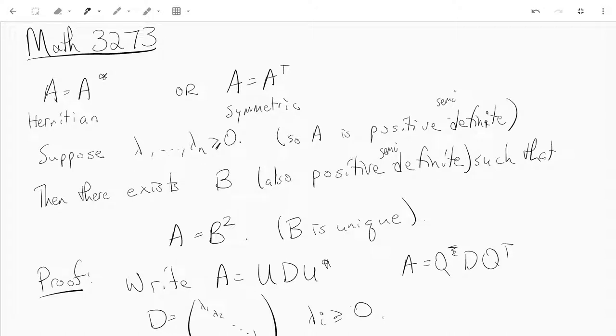So all its eigenvalues are non-negative. Then there exists a positive semi-definite matrix B such that B squared equals A.